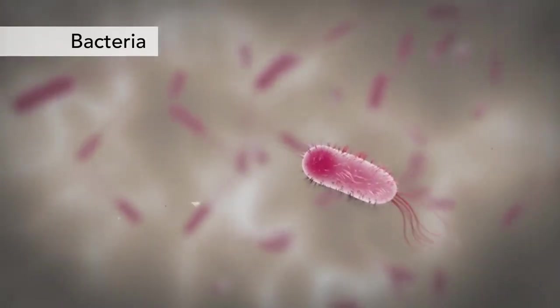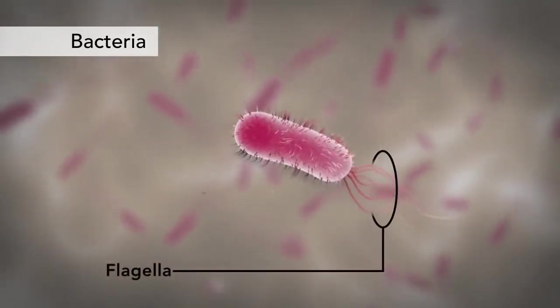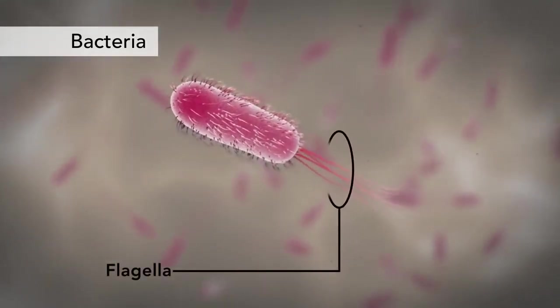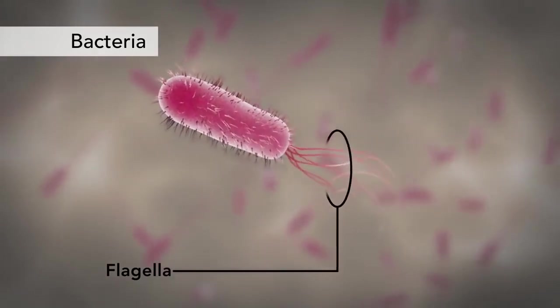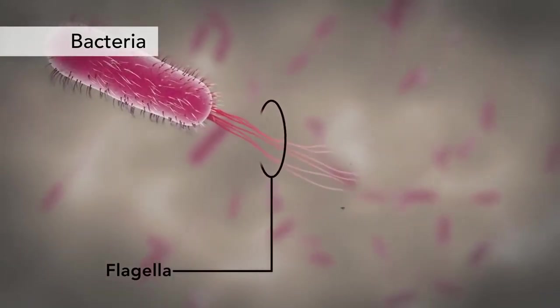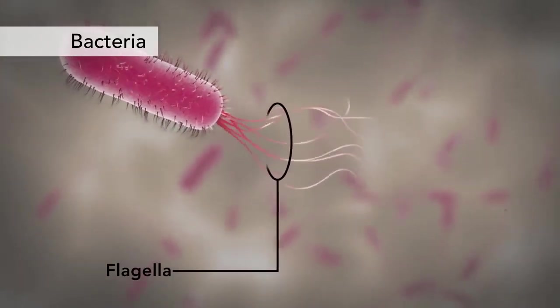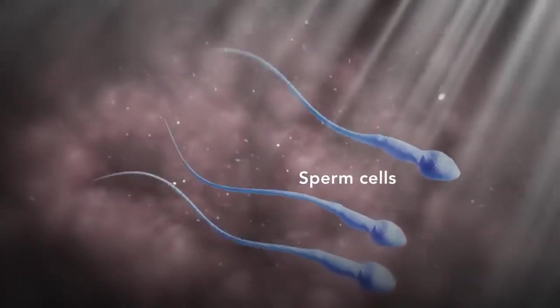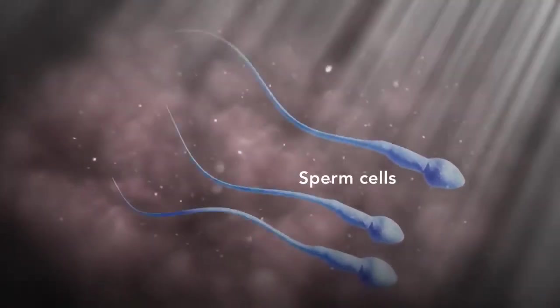Another unique feature in some cells is flagella. Some bacteria have flagella. A flagellum is like a little tail that can help a cell move or propel itself. The only human cell that has a flagellum is a sperm cell.